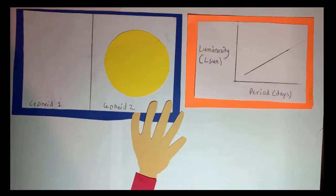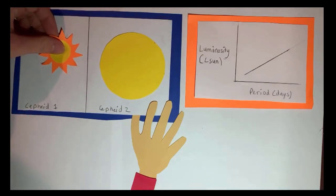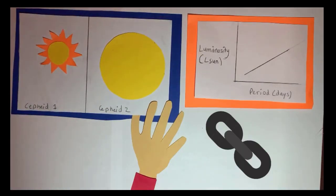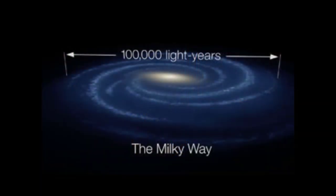Cepheid variables are variable stars used by Leavitt. These stars have periods of variation that are closely related to their luminosity. This makes these stars very useful when measuring interstellar and intergalactic distances.